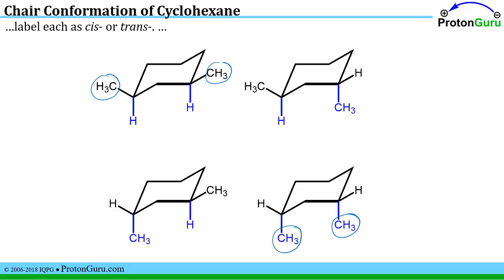It has absolutely nothing to do with whether they're equatorial or axial. They could both be equatorial, they could both be axial, or you could have one of each as long as they're pointed in the same direction. So this is a cis isomer and this is also a cis isomer.